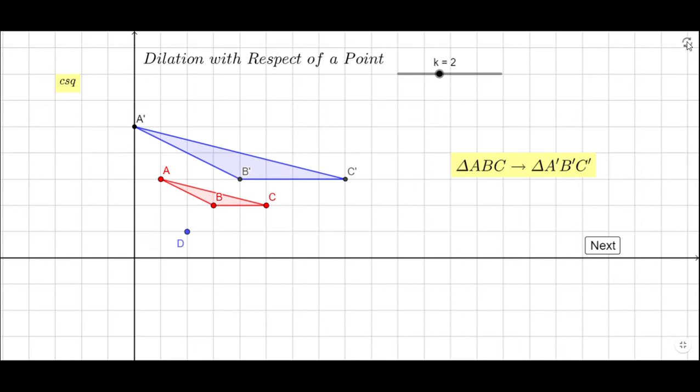Welcome or welcome back to C squared. In this video clip we'll talk about dilation with respect to a point. This red triangle, the pre-image, is dilated with a scale factor of 2 and the center of dilation is point D. Triangle ABC is transforming to triangle A prime B prime C prime.